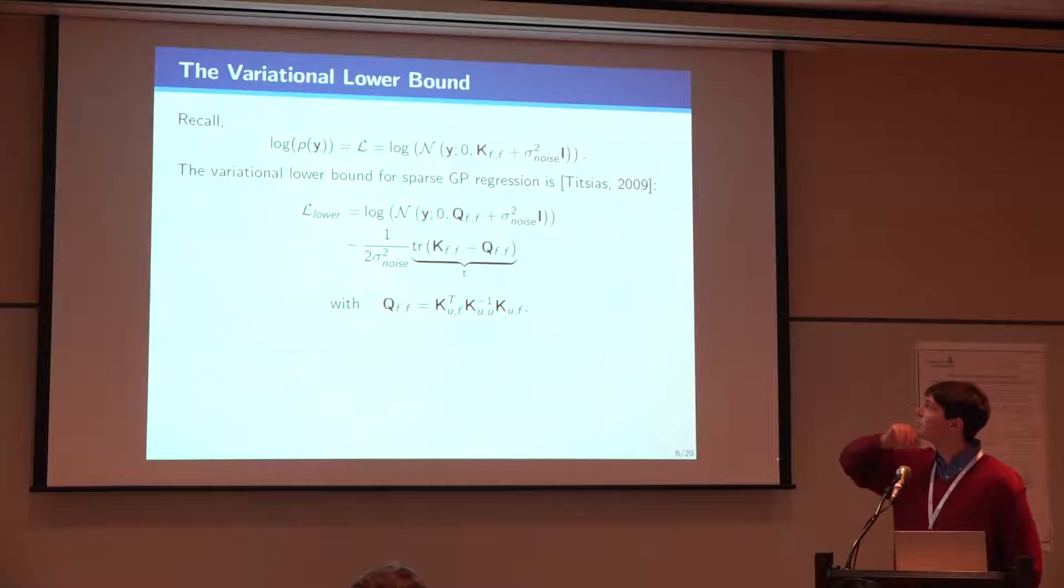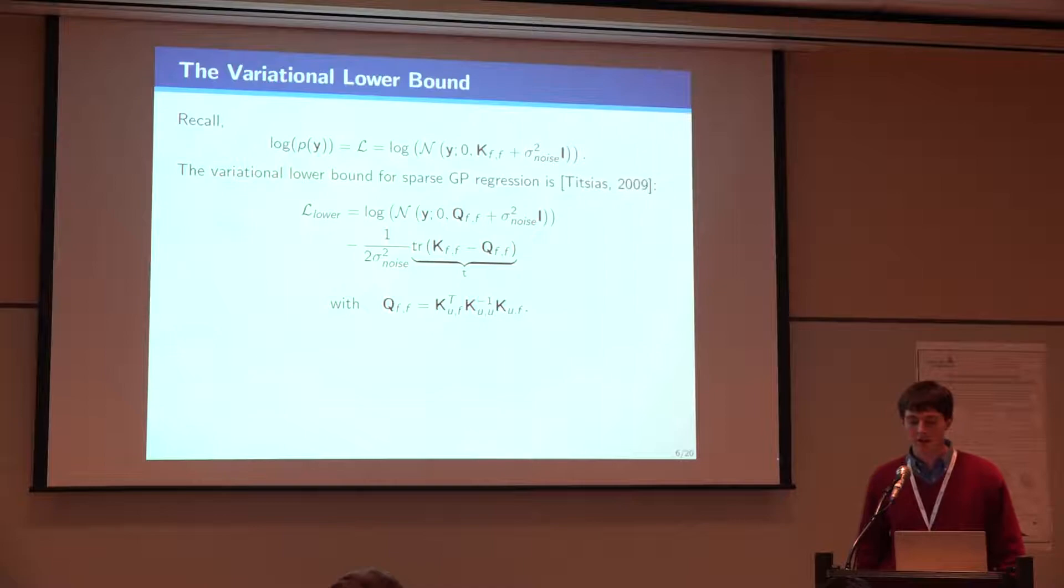In sparse variational inference, we replace KFF by this matrix QFF, which is basically a rank M approximation to this matrix. In order to perform inference now, we just need to invert a rank M matrix. So that's less computationally costly. The ELBO which comes out of this framework looks a lot like the full marginal likelihood, except we've replaced KFF by this rank M approximation. And we also have this term which comes from the error in the trace for making this approximation.